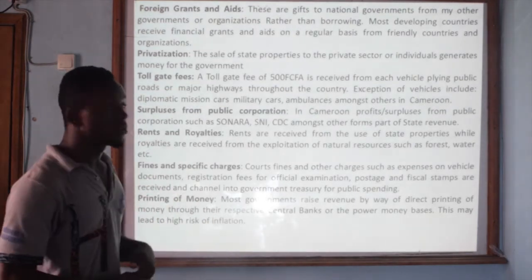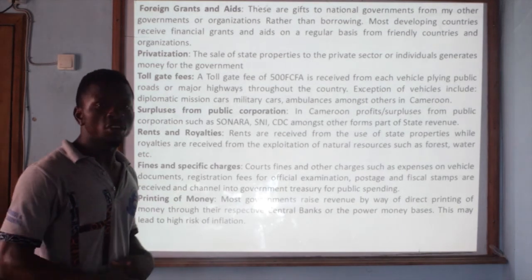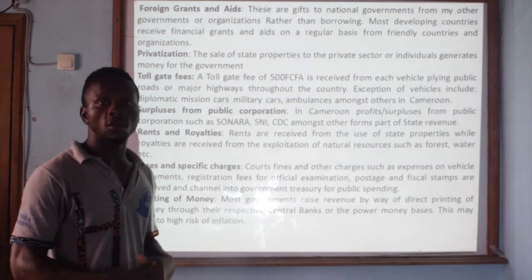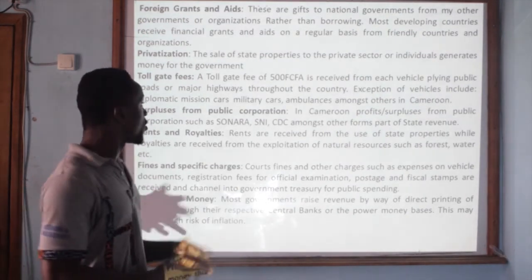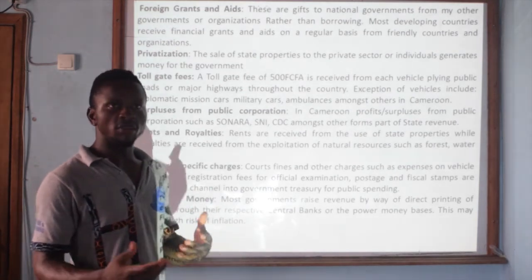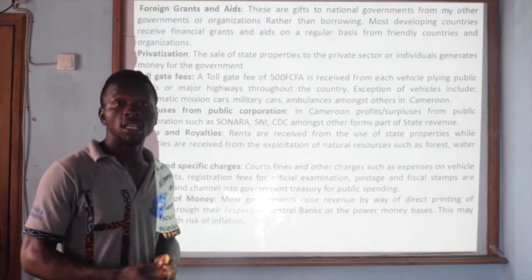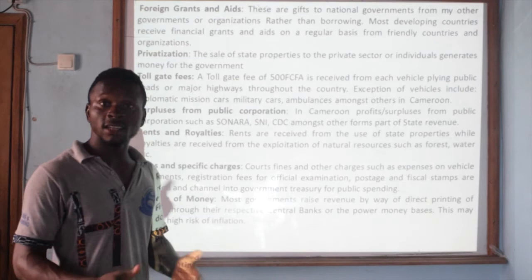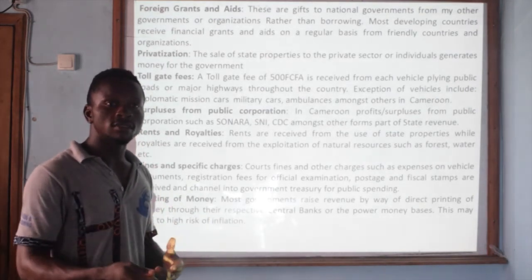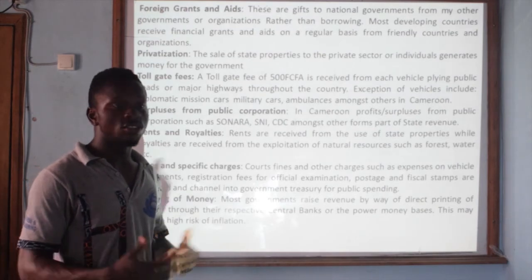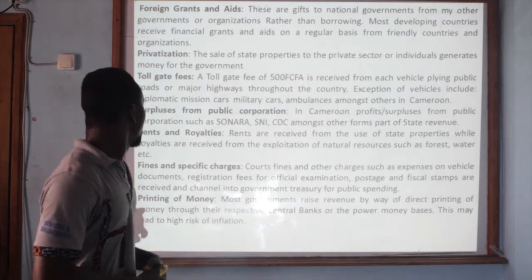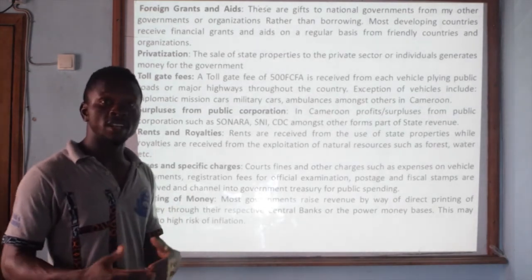We can also talk about toll fees. Toll fees are also a way the government can collect money. For example, the government can place tolls where vehicles traveling in and out of a certain town are required to pay money. This money collected along the roadside is known as toll fees. In some countries, especially in Germany, it is 500 rams that the government uses to raise income.